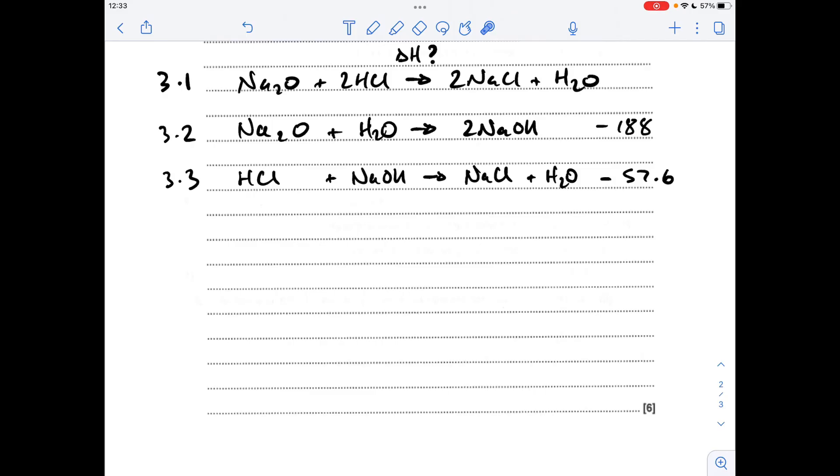So if we have a look at the reaction that we want to calculate the enthalpy change for, 3.1, we need a mole of sodium oxide. Well there's a mole of sodium oxide in 3.2, it's on the correct side of the arrow and it's in the correct amount, so we're just going to take the enthalpy change for 3.2. We also need two moles of HCl. Well there's one mole of HCl on the correct side of the equation, on the left hand side, but there's only one mole there, so we're going to add to 3.2 two times the value for 3.3.